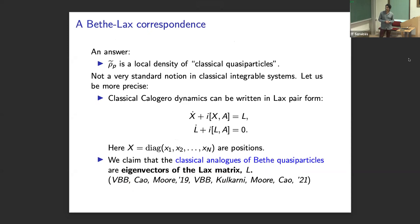So I'm going to try to answer this question in my remaining time. So the answer we proposed is that rho should be viewed as a local density of classical quasiparticles. And this is not a very standard notion in classical integrable system. So let me explain what I mean. Our starting point is this lax pair formalism for the Calogero dynamics. So just for context here, you have n particles, and you're expressing the dynamics of these n classical particles now in terms of two coupled n by n matrices.